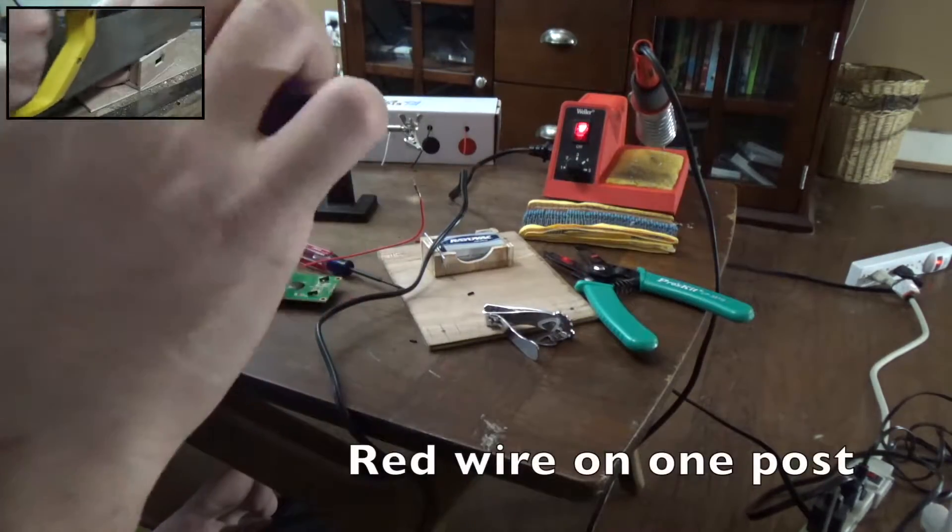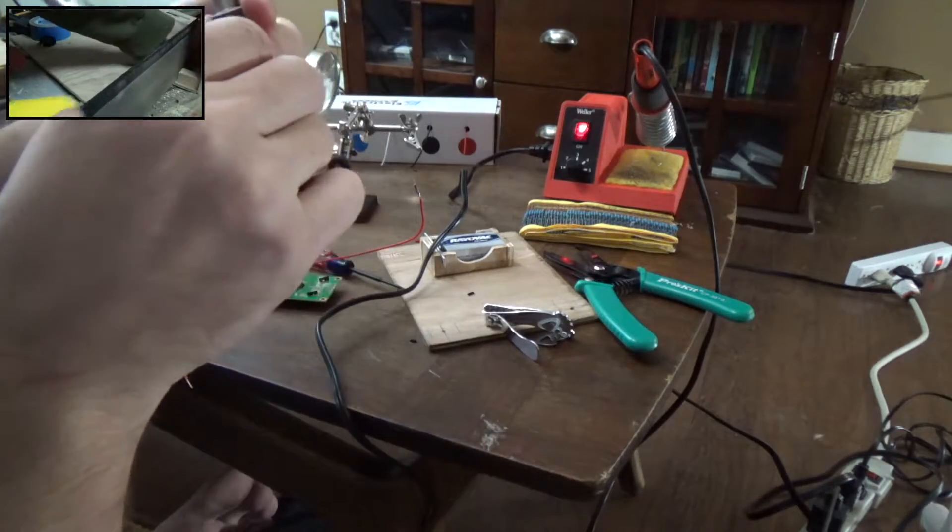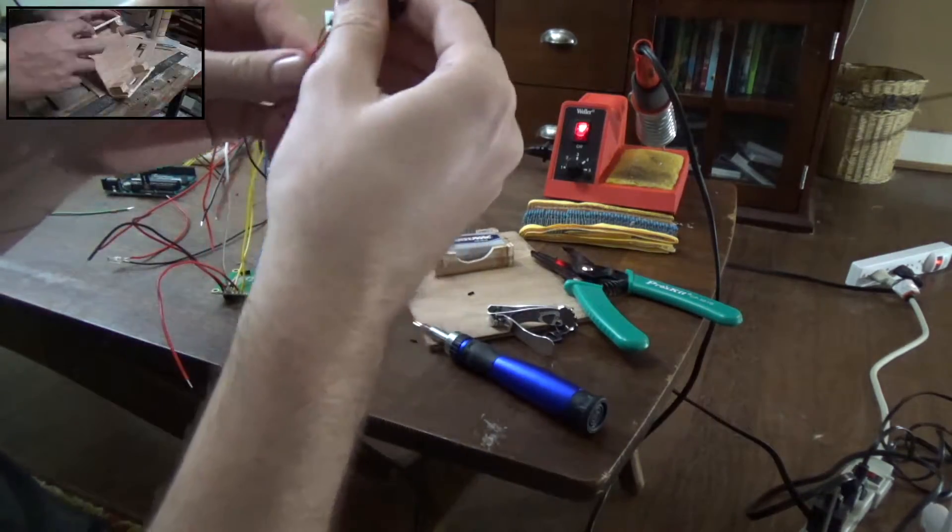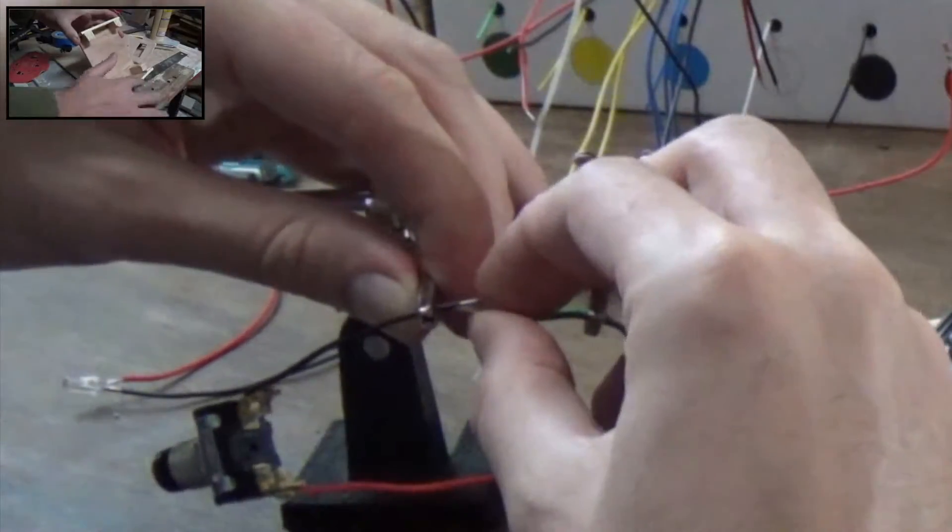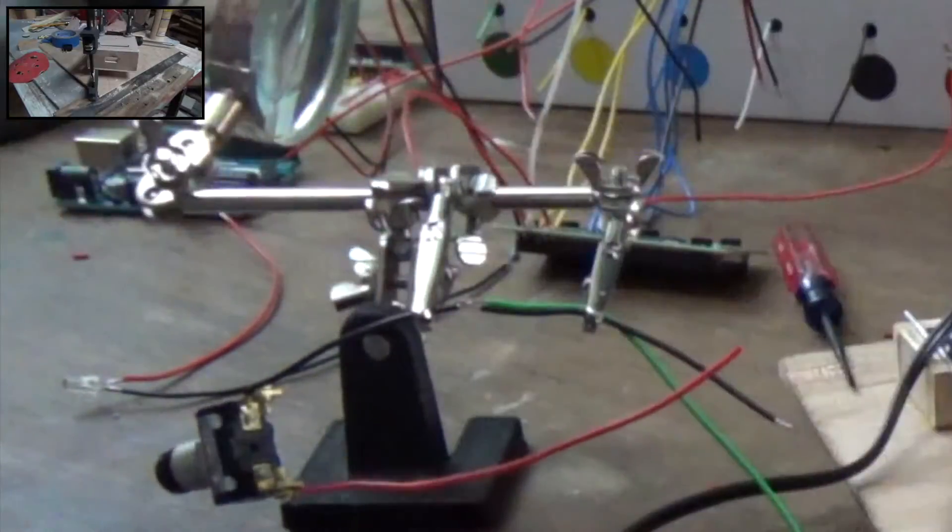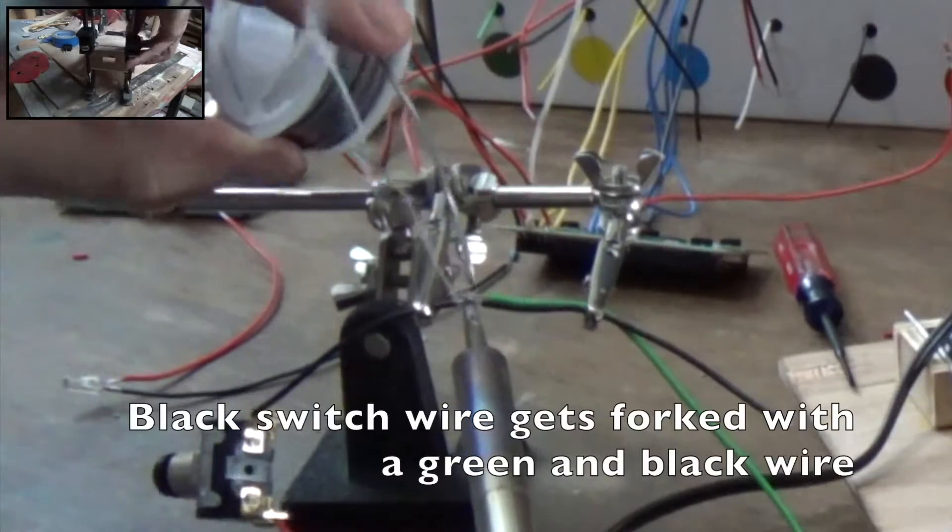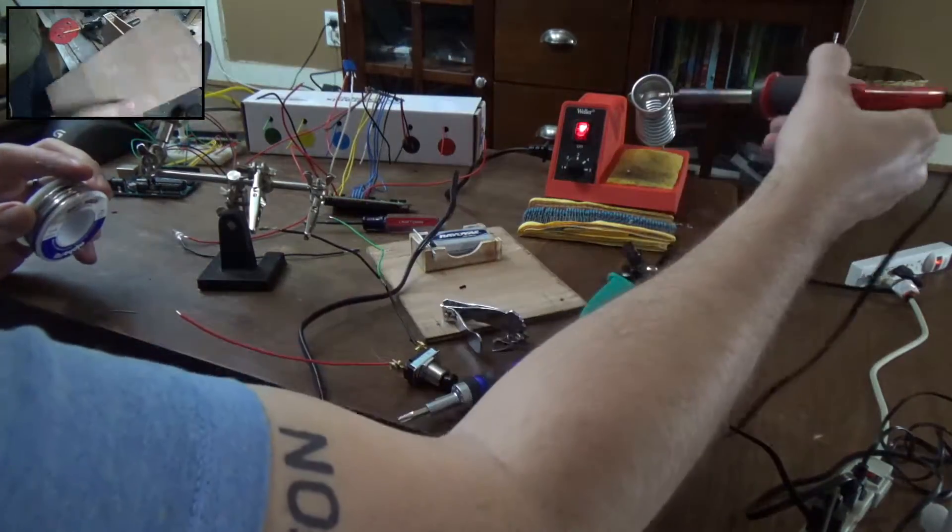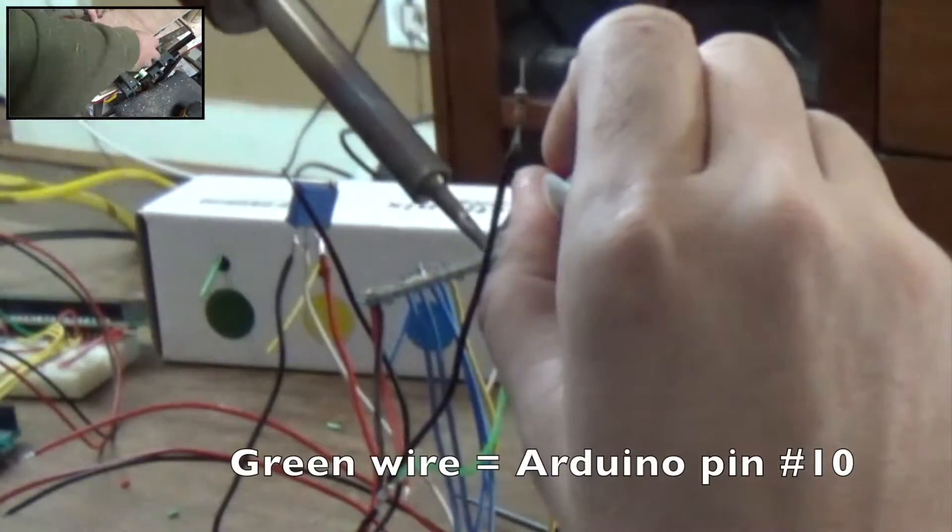Now we need to wire up the switch. Just need a red wire on one post and a black wire on the other post. The black wire needs to fork, so I did a green which will go to an Arduino pin and a black to ground, and then added a 10,000 ohm resistor to the board and soldered the green wire to Arduino pin number 10.